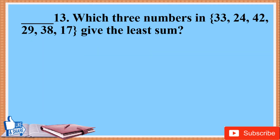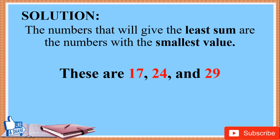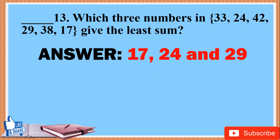13. Which three numbers — 33, 24, 42, 29, 38, 17 — give the least sum? Solution: The numbers that will give the least sum are the numbers with the smallest value. These numbers are 17, 24, and 29. Answer: 17, 24, and 29.